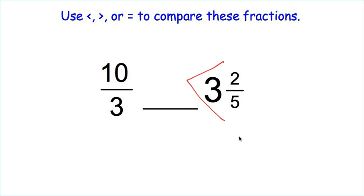5 times 3 plus 2, 17 fifths. We're going to compare 17 fifths to 10 thirds.